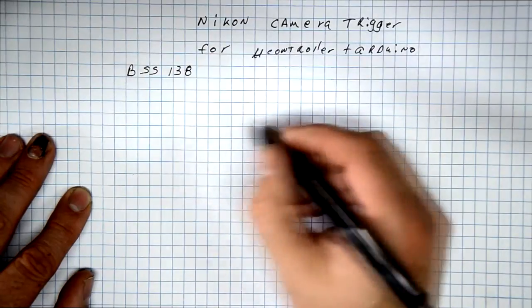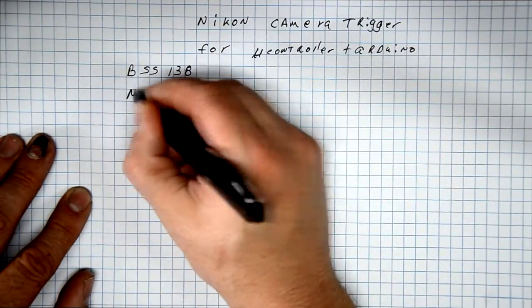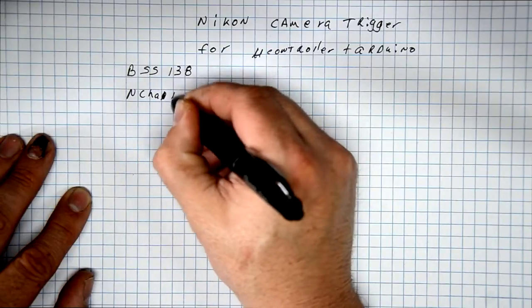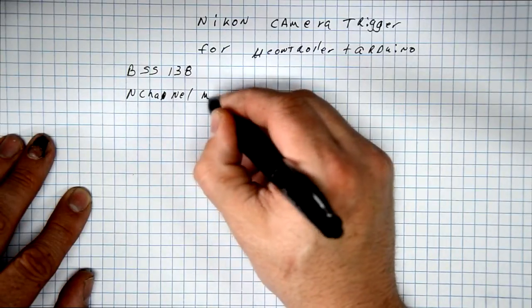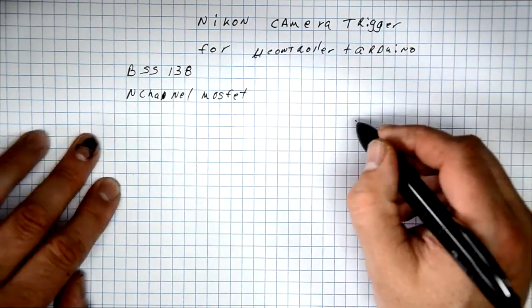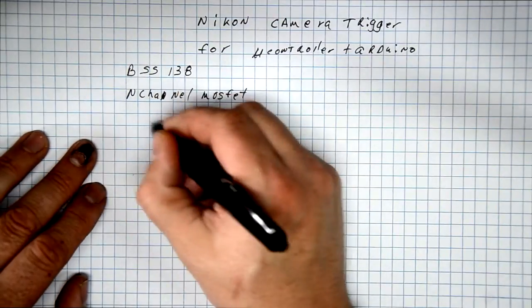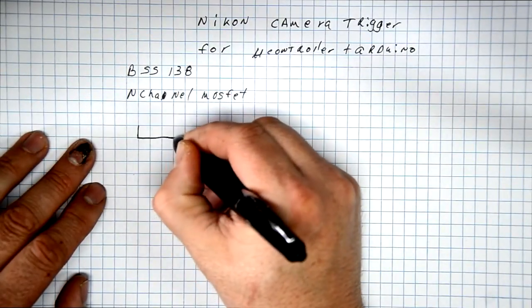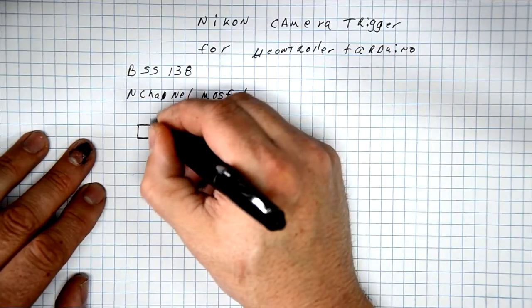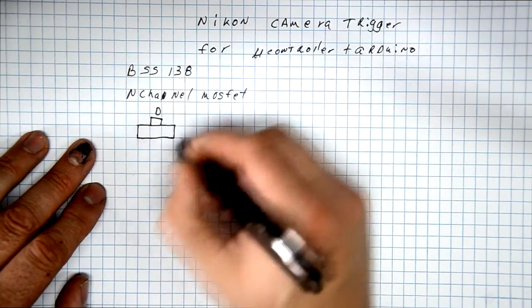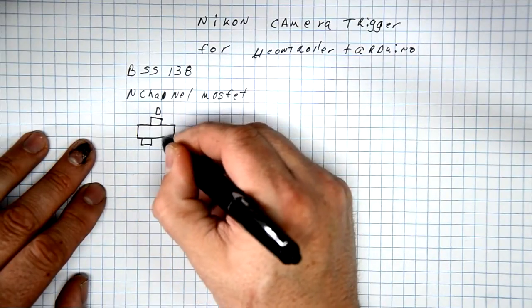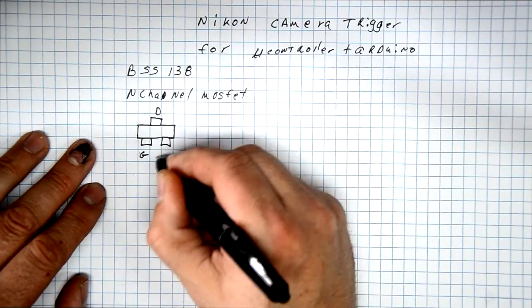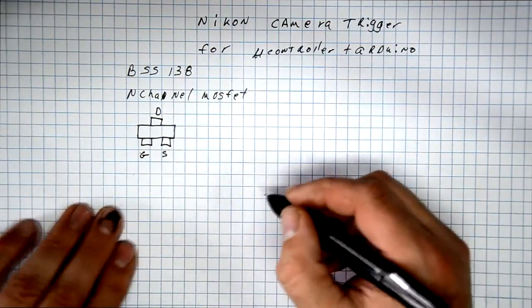I've chosen the BSS 138, basically because I had it. It's an N-channel MOSFET. MOSFETs are very easy to control because you don't need any resistor at the gate.